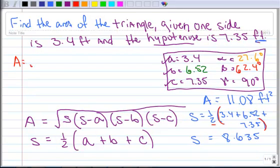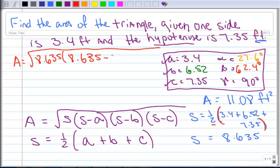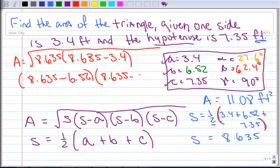So now the area is going to be equal to this big square root. So we have 8.635 times 8.635 minus 3.4. And I have no choice but to just continue it on this other line here. 8.635 minus 6.52 and 8.635 minus 7.35.